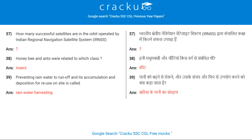How many successful satellites are in orbit operated by the Indian Regional Navigation Satellite System (IRNSS)? 7. Honey bees and ants belong to which class? Insect.